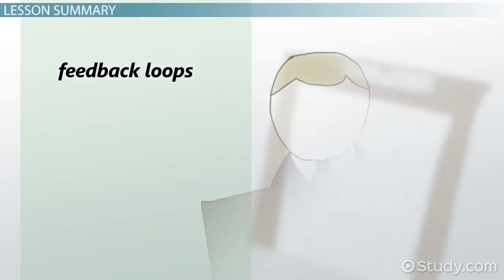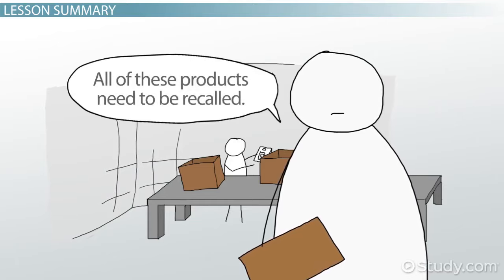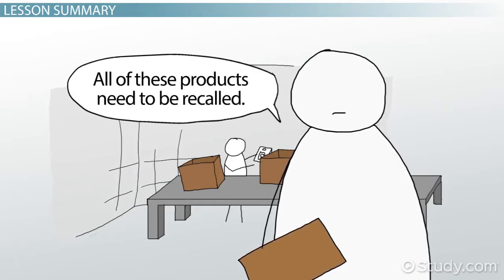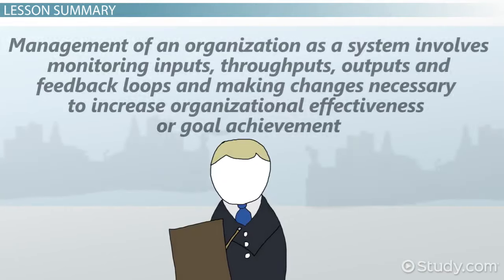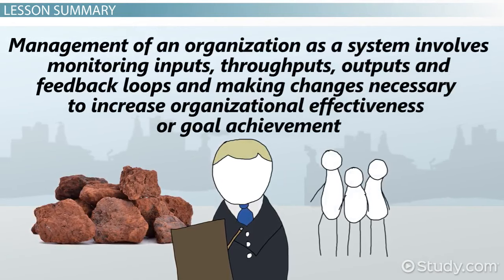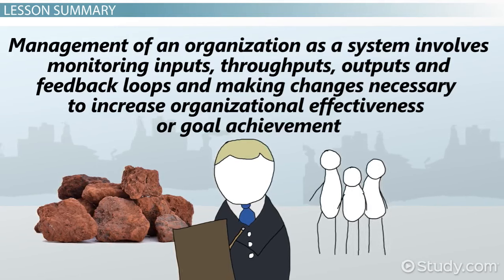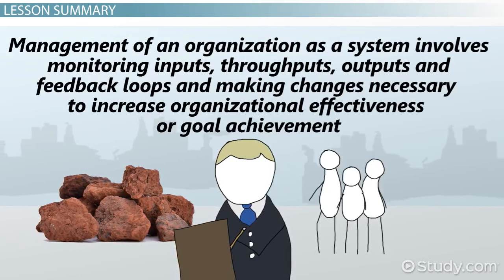Feedback loops are also a part of an open system. Feedback loops can be positive or negative, which denotes problems or successes with the system. Management of an organization as a system involves monitoring inputs, throughputs, outputs, and feedback loops, and making changes necessary to increase organizational effectiveness or goal achievement.